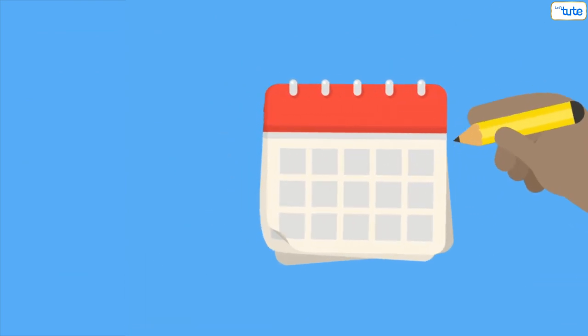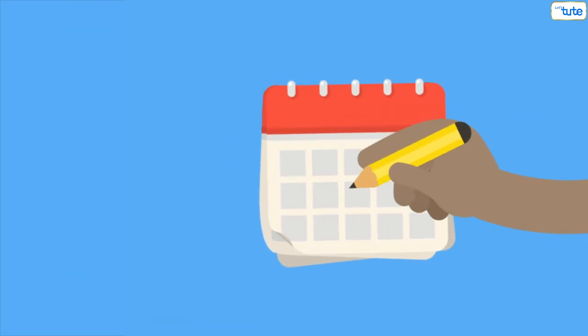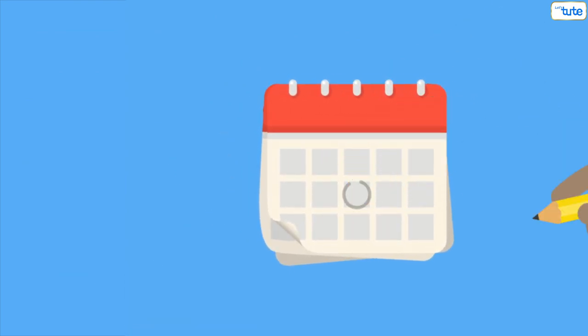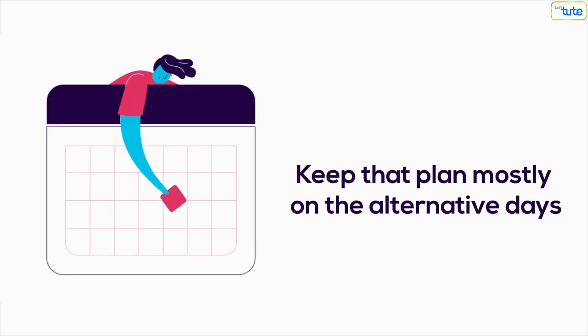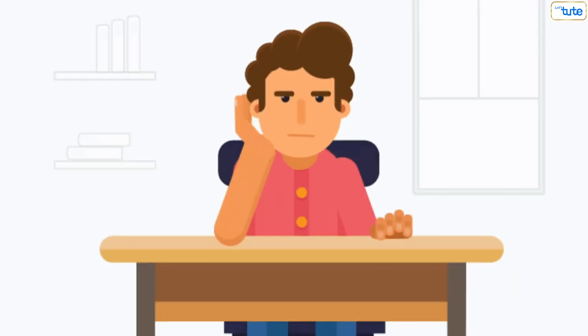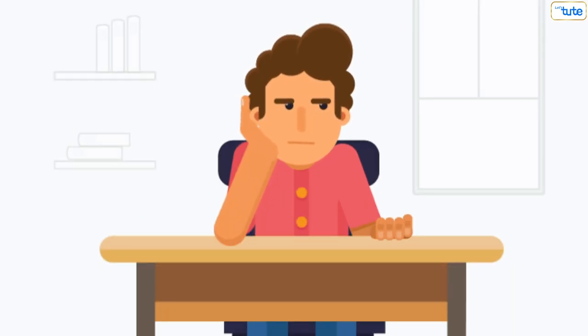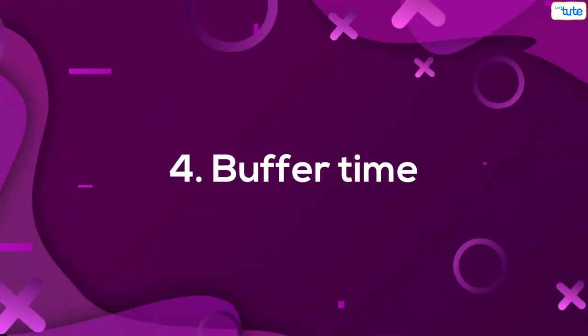Number three: keep alternative days for alternative plans. By alternative days, I mean when planning an activity in your daily timetable, keep that plan mostly on alternating days. At some point you will get bored and eventually stop following the timetable, which is not something that you want.